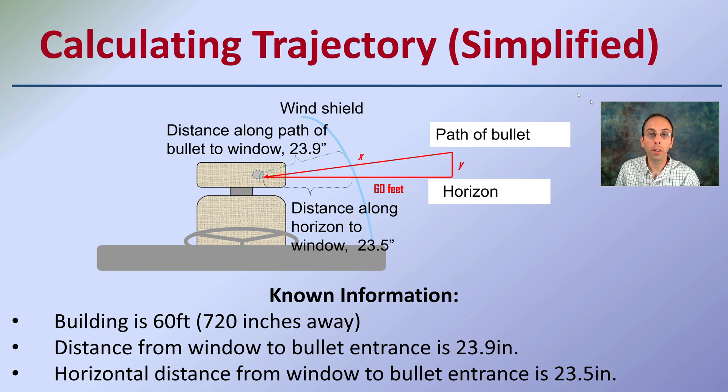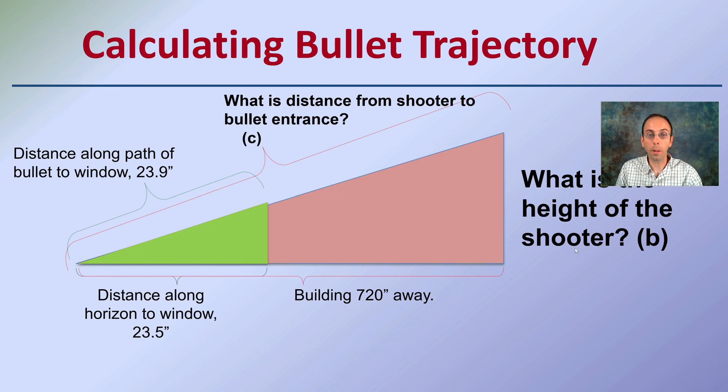Now when we're looking at calculating trajectory, this is going to be a simplified version. We're looking at an impact with a driver, and we have the path of bullet, we have the windshield. We have the building 60 feet away or 720 inches away. The distance from the window to the bullet is 23.9 inches. Horizontal distance from the window to the bullet entrance point is 23.5 inches. So let's zoom in and take a look at this, basically looking at triangles.